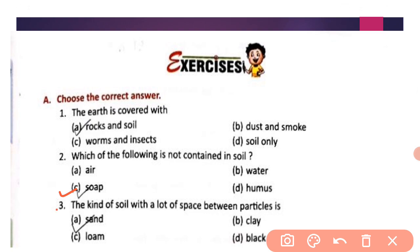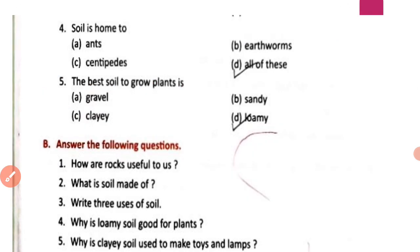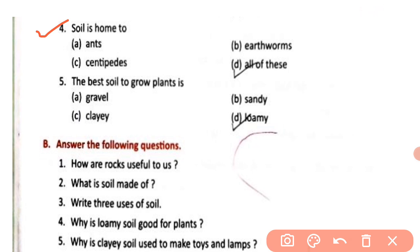Third: the kind of soil with a lot of space between particles — it is sandy soil. Fourth: soil is home to ants, centipedes, and earthworms — so the correct answer is option D, all of these. Fifth: the best soil to grow plants is loamy soil — so option D is the correct answer.